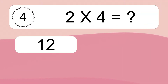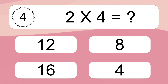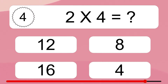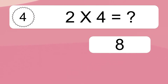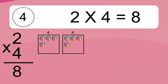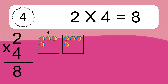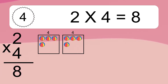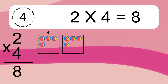Two times four equals what? Two times four equals eight. We have two boxes, and each box has four colorful balls inside. If you count all the balls in all the boxes together, you will have two times four balls. This equals eight balls.